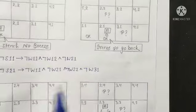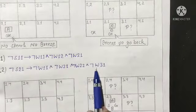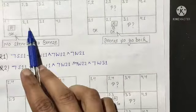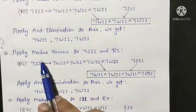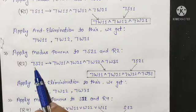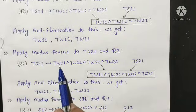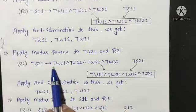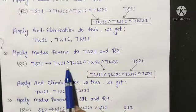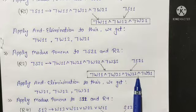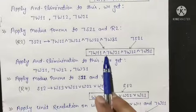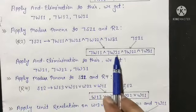We are applying Modus Ponens again. Let us consider this is the P statement, Q and P — if P is true and P implies Q is true, then Q has to be true according to Modus Ponens. And again we are eliminating the AND operation to get the resulting sentences.